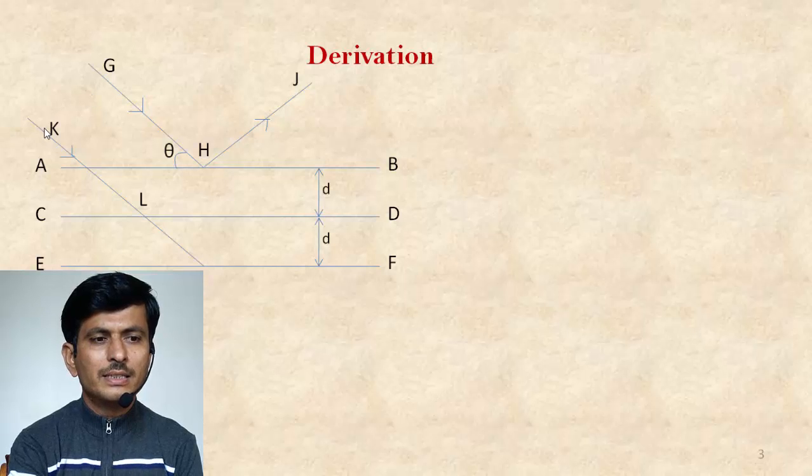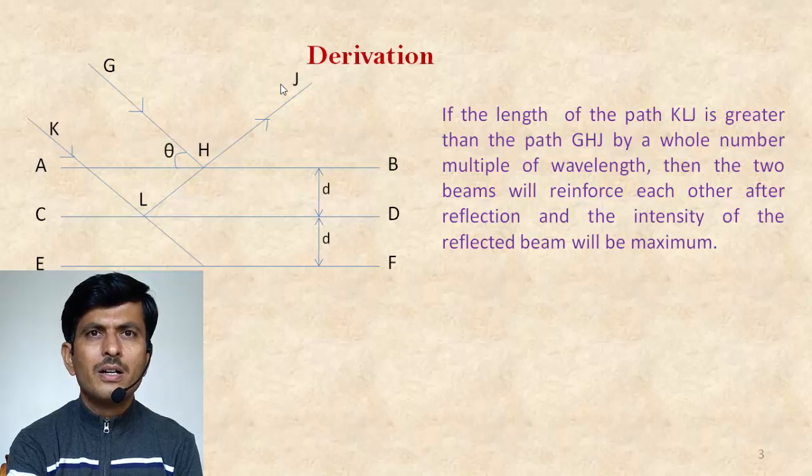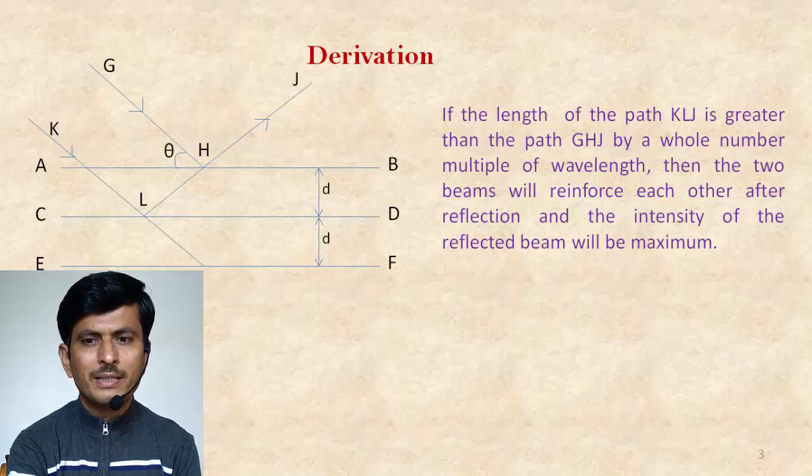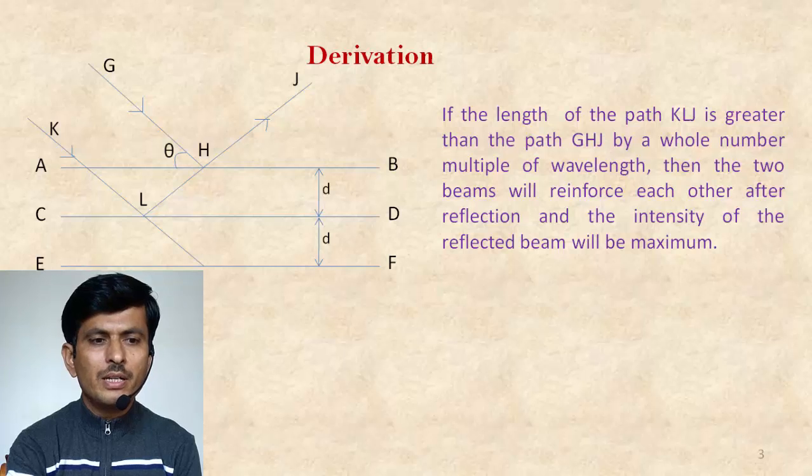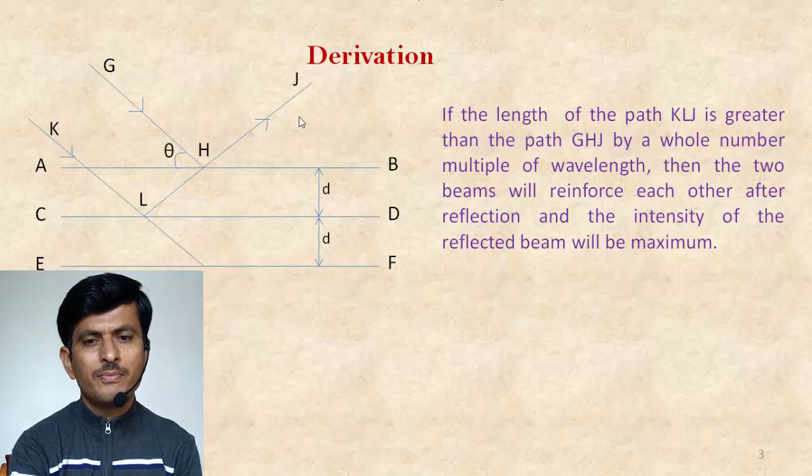On the other hand, the second ray KL penetrates the first layer and is incident on the second plane and is reflected along the path. Now, if the path length KL is greater than the path GH by a whole number multiple of wavelength, then the two beams will reinforce each other. After reflection, the intensity of this reflected ray becomes maximum.